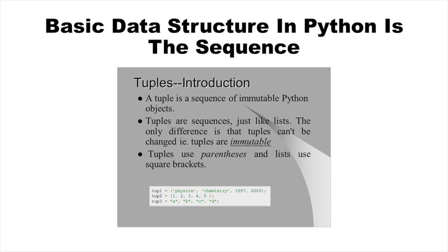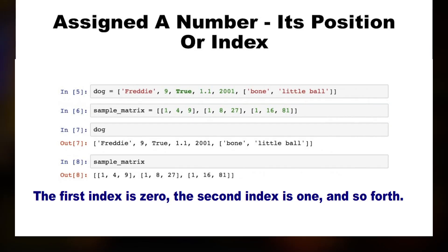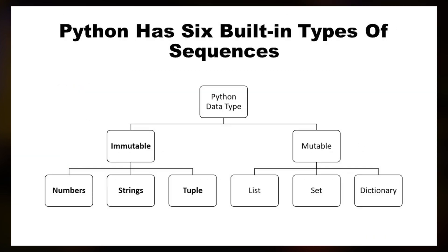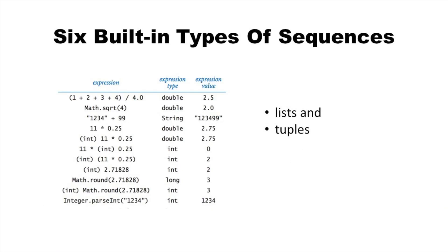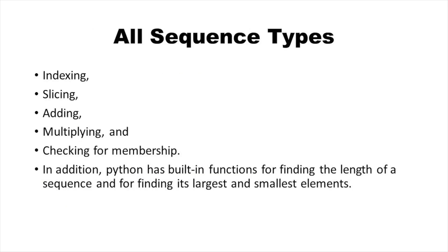The most basic data structure in Python is the sequence. Each element of a sequence is assigned a number — its position or index. The first index is 0, the second index is 1, and so forth. Python has 6 built-in types of sequences, but the most common ones are lists and tuples, which we would see in this module. There are certain things you can do with all sequence types. These operations include indexing, slicing, adding, multiplying, and checking for membership. In addition, Python has built-in functions for finding the length of a sequence and for finding its largest and smallest elements.